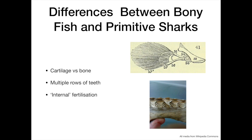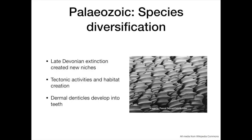Further differences include multiple rows of teeth and internal fertilization, as opposed to teleost fish, which release sperm and eggs into the water where external fertilization occurs.